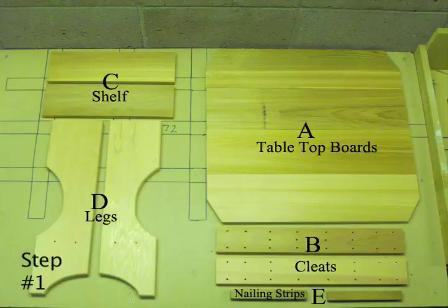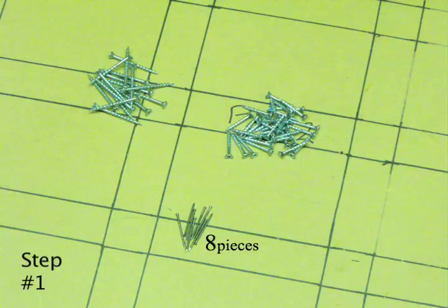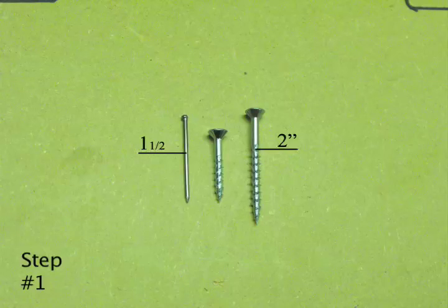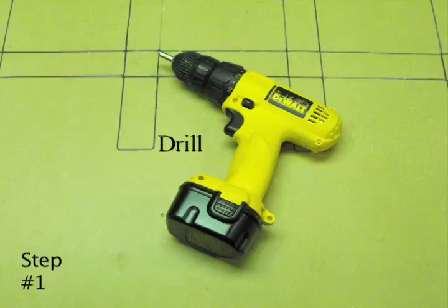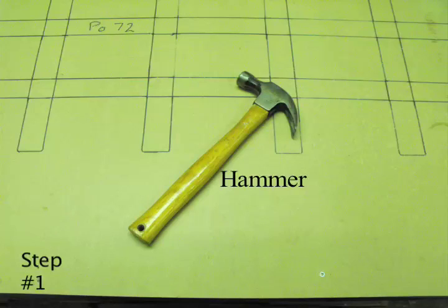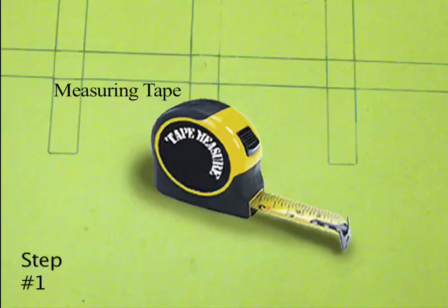You should also have eight nails, twelve two-inch screws, and thirty-two one-and-a-half-inch screws. The tools you will need to complete this project are a drill, a hammer, and a tape measure. Alright, let's begin.